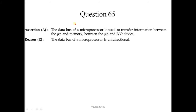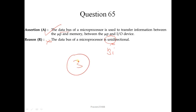Question number 65. The data bus of a microprocessor is used to transfer information between the microprocessor and memory, and between the microprocessor and input/output devices — this is a correct statement. The reason states that the data bus is unidirectional, but this is wrong — the data bus is bidirectional. So A is true but R is false. The correct option is 3.